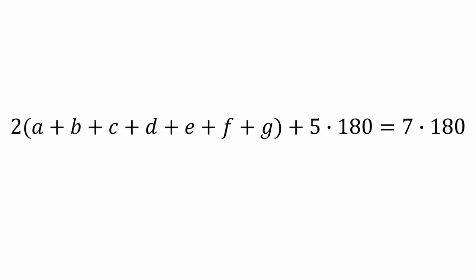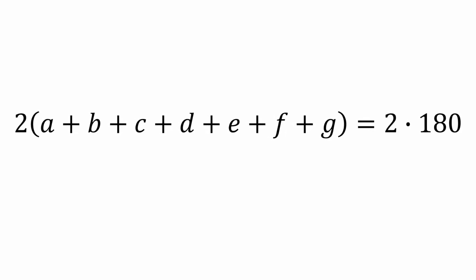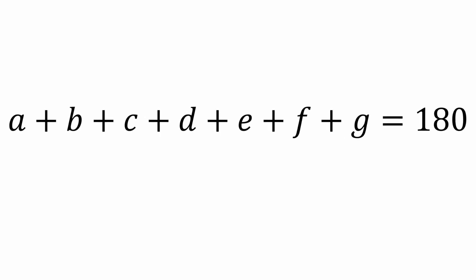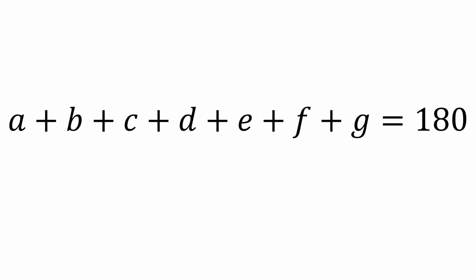Let's subtract 5×180 from both sides. The right side just becomes 2×180. And I bet you can guess the final step. Yep, divide both sides by 2. And there you have it. A very nice clean proof for the sum of the angles in an irregular heptagonal star.